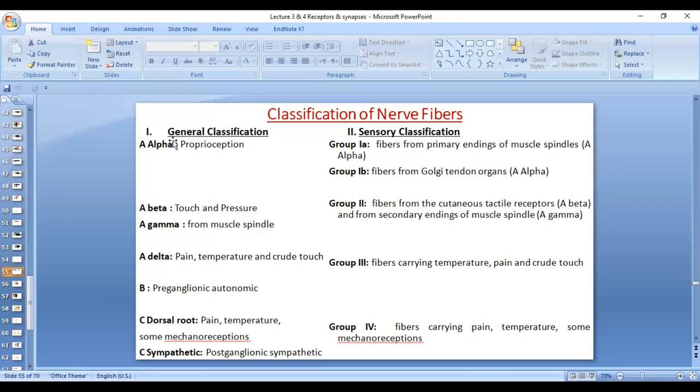So A-alpha, proprioception, because they come from two types of receptors, from muscle spindle as well as from Golgi tendon organs. So they were divided into 1A that comes from primary endings of muscle spindles and 1B that comes from Golgi tendon organs. A-beta and A-gamma, they were both in one group, group two, in which fibers from the tactile receptors, A-beta, for touch and pressure, and from the secondary endings of muscle spindle. 1A were from primary endings of muscle spindle and 2 from the secondary endings of muscle spindle. Group three are the same as A-delta and group four are the same as C fibers.